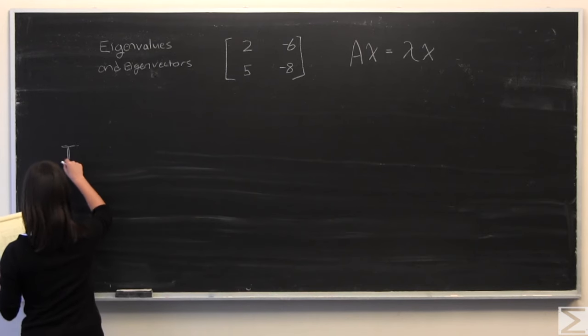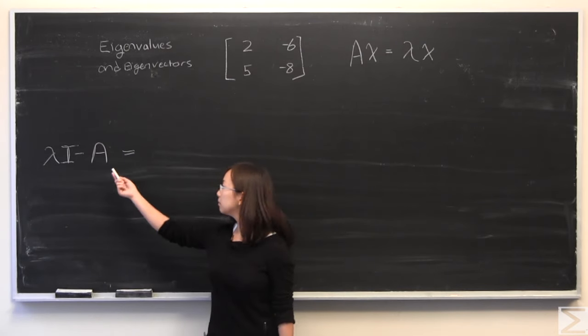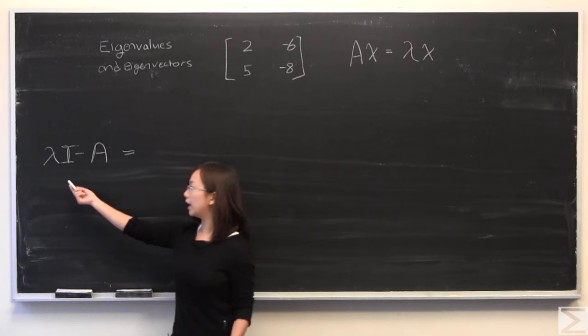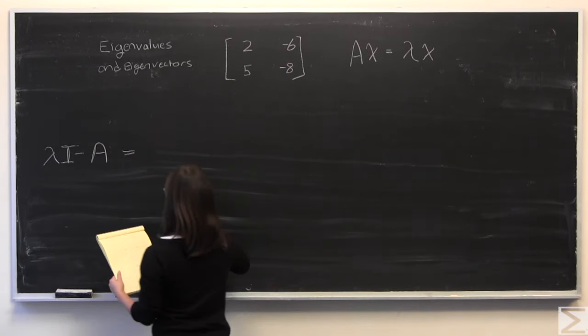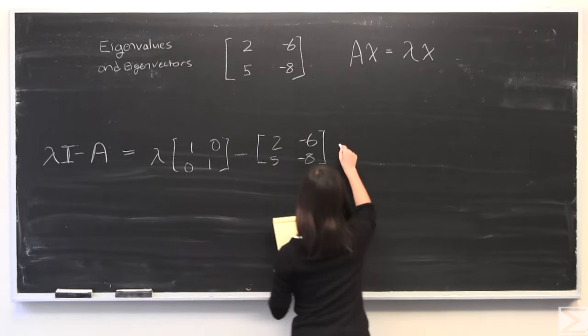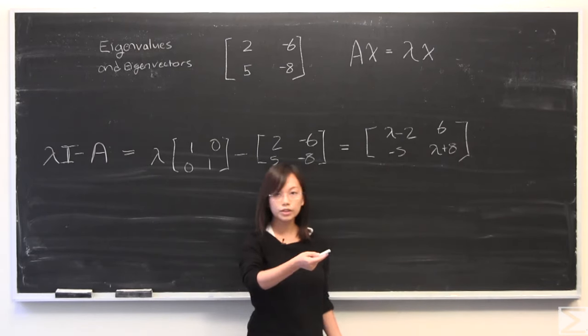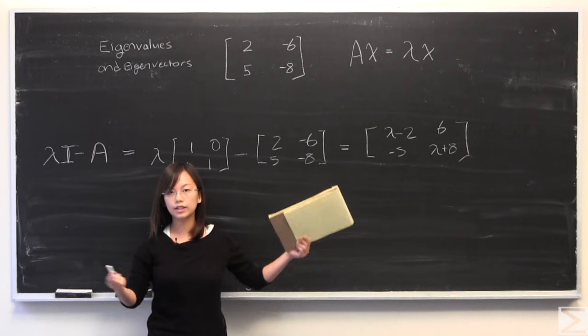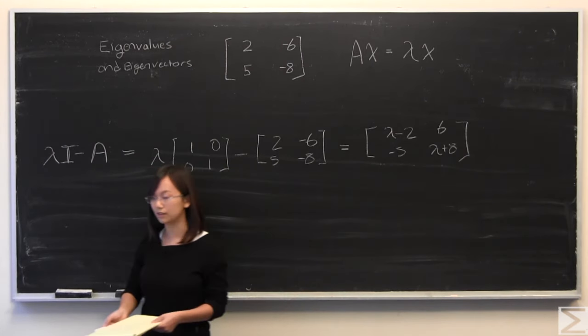So we're gonna start by evaluating this where I is going to be equal to the identity matrix. So we have a 2 by 2 matrix so we're gonna use the 2 by 2 identity matrix of course. So it evaluates pretty nicely and then we're going to take the determinant of it and set it equal to 0 and then we're gonna solve for lambda. And that's how you get the eigenvalues of it.